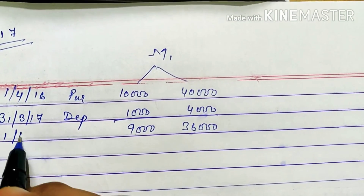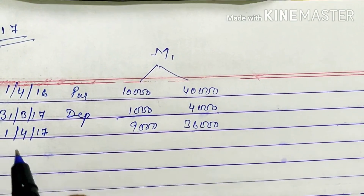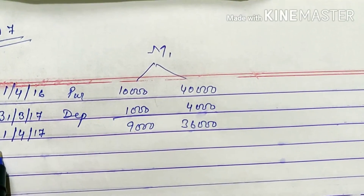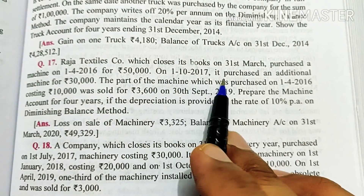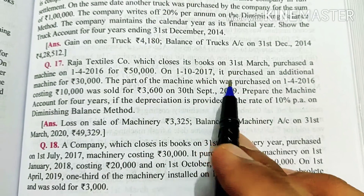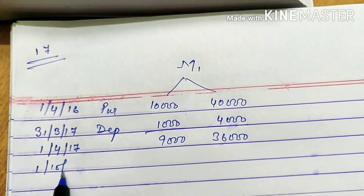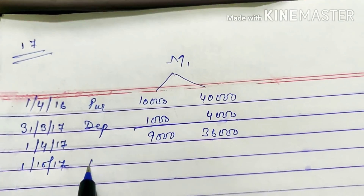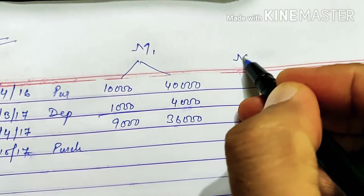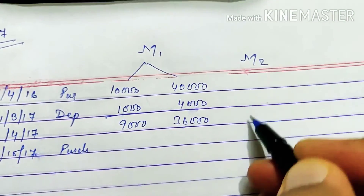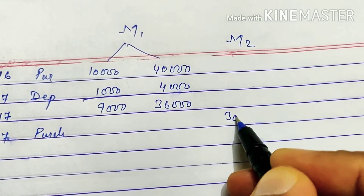From 1st April 2017 onwards, we now also buy a second machine on 1st October 2017. We purchase M2 for Rs. 30,000.